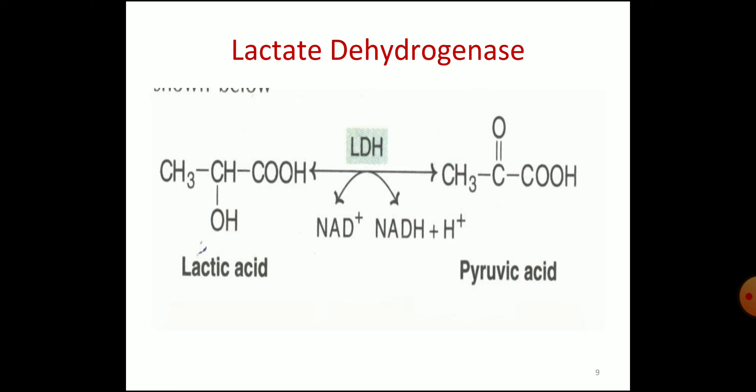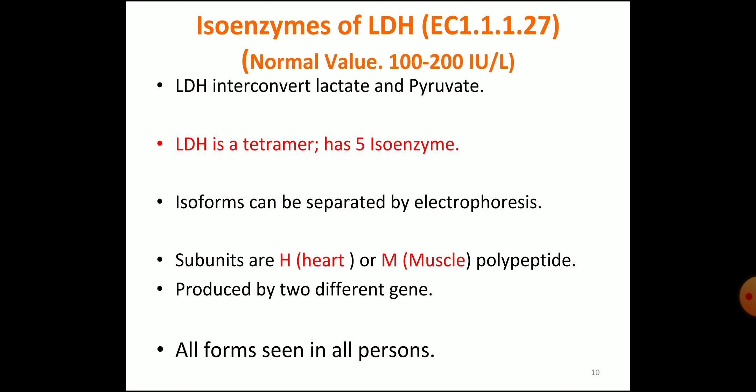Now we will move on to the typical example of an isoenzyme: lactate dehydrogenase. Lactate dehydrogenase is a tetrameric enzyme that catalyzes the oxidation of lactate to pyruvate. It has five isoenzymes and is made up of two polypeptides — M from muscle and H from heart. The reaction: lactate is oxidized to pyruvate where NAD is the coenzyme. LDH interconverts lactate and pyruvate; normal values are 100 to 200 international units per liter.